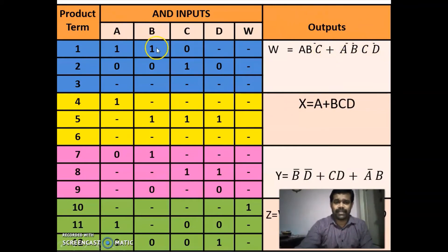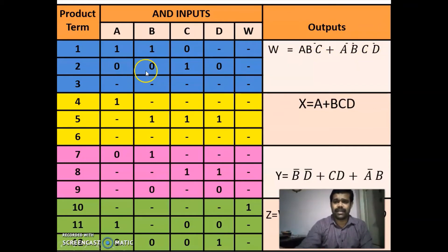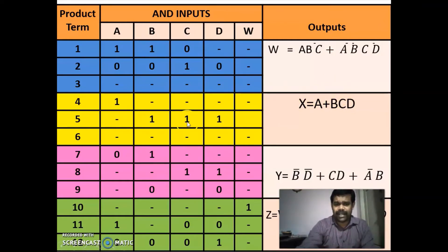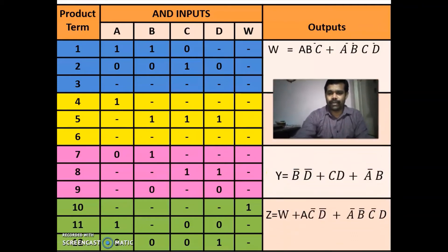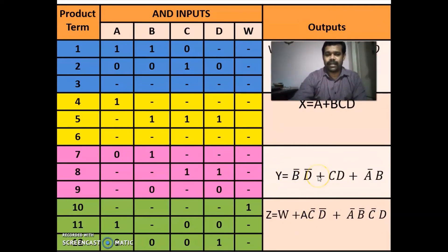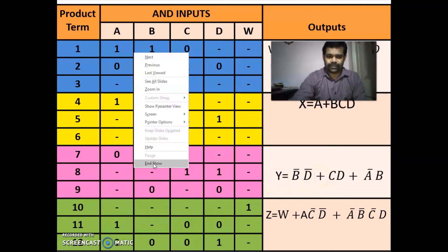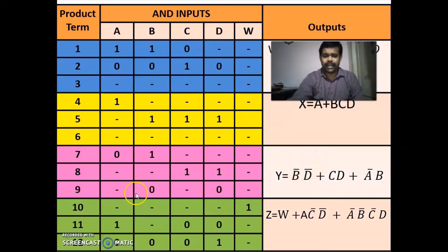For the second term A-bar B-bar C D-bar: put 0, 0, 1, 0. The third term is not there so put dash. For X: term A gives 1 in place of A; BCD gives 1 in place of B, C, D, with dashes elsewhere. For Y: B-bar D-bar gives 0 in B and 0 in D; CD gives 1 in C and 1 in D; A-bar B gives 0 in A and 1 in B.